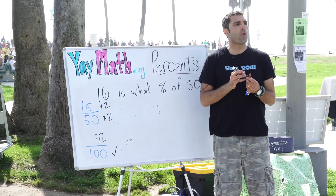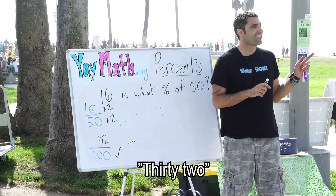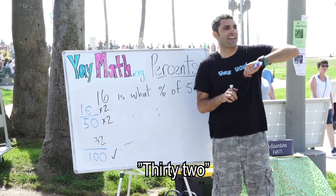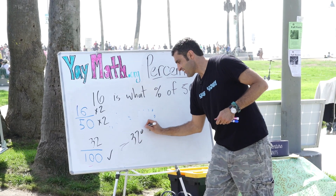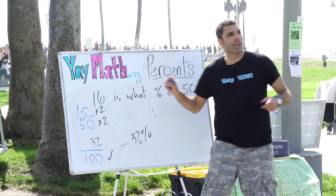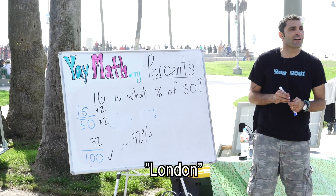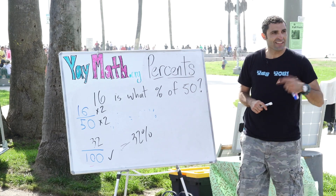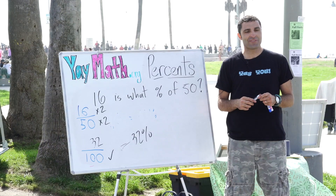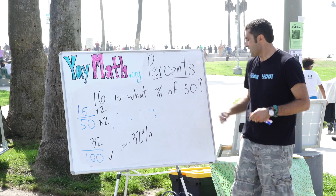All right, so if we can get 16 over 50 to 32 over 100, we now have the percent. What percent is 32 over 100? 32 percent! Well done. Where are you from? London — welcome! There are a lot of people from the UK out here, it's pretty cool.